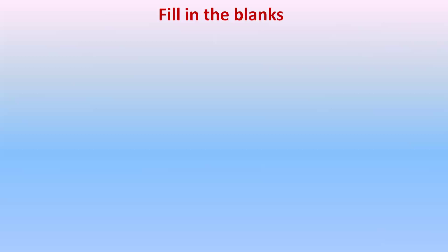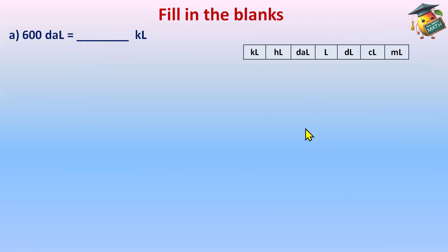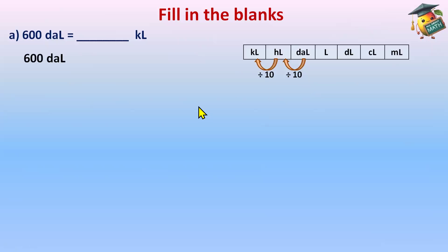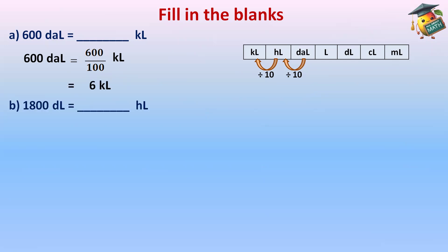The next question is a fill-in-the-blank: 600 decaliters to kiloliters. Make the chart. Decalitre is here, and we are moving backward — from right to left — so we divide. Decalitre to hectolitre, then hectolitre to kilolitre: two steps, divide by 10 each. So divide 600 by 100. 600 ÷ 100 = 6 kilolitres. Cancel the two zeros, and we are left with 6 kilolitres.